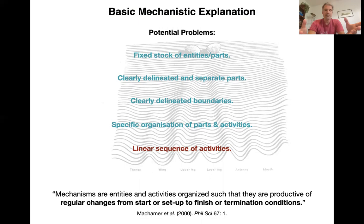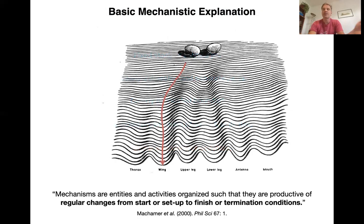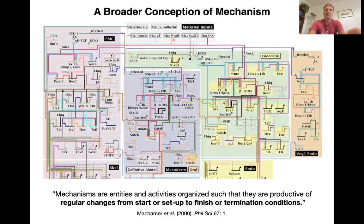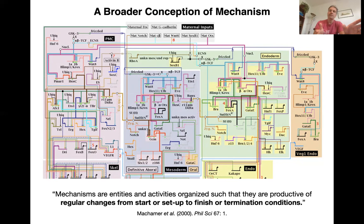There is a different problem: the basic definition of a mechanism implies a very linear sequence of activities. Of course, at a certain level, one thing happens after another along a developmental trajectory. But if you look at the underlying process creating the geometry of that trajectory — for example, the sea urchin endomesoderm network — it's very complicated, not simple at all. There is no simple way to connect this very complex network to a linear causal sequence of events. We need to come up with a broader conception of a mechanism that includes this complexity and the fact that these complex networks are heavily driven by feedbacks.